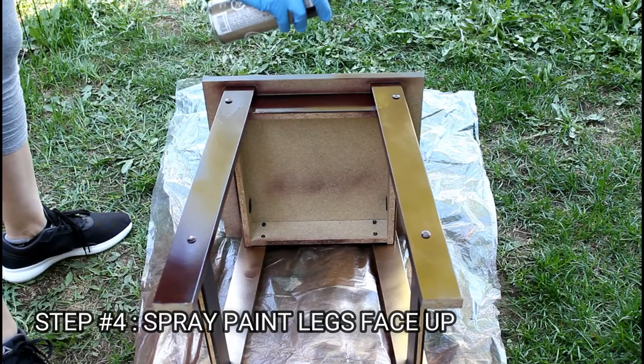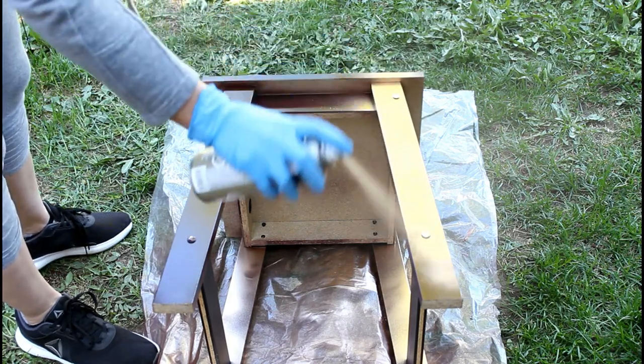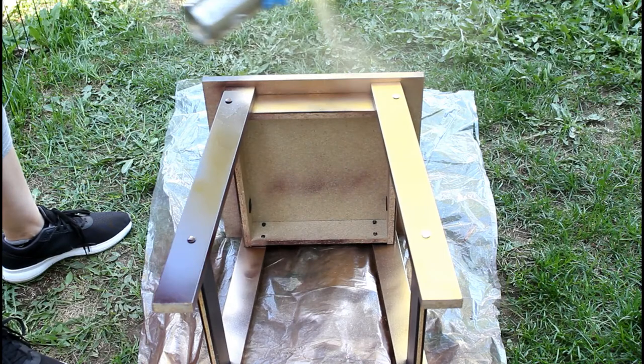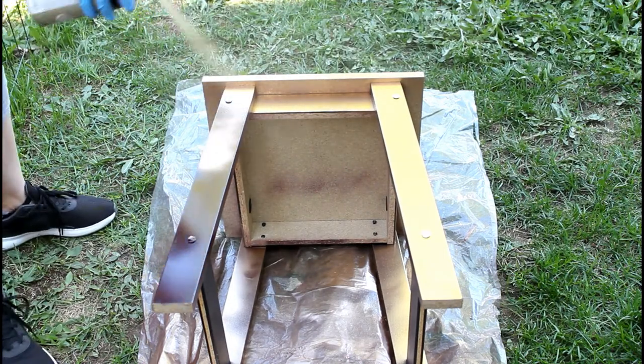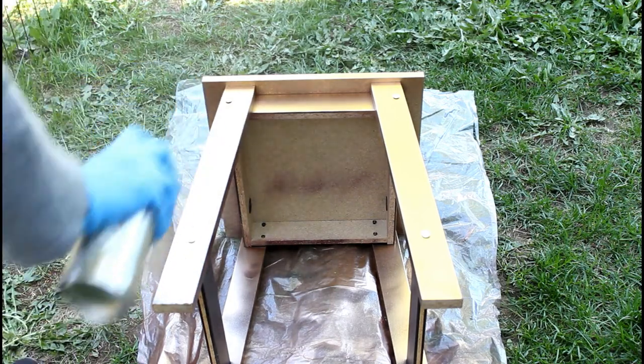To allow our spray paint to dry evenly without dripping we will only apply it one side at a time on surfaces that are facing upwards. We will then wait until the surfaces are completely dry before turning the table and applying the spray paint on the other sides.